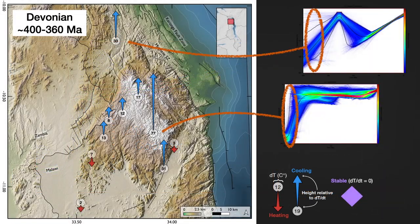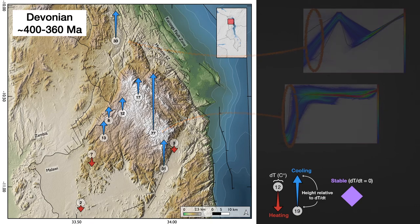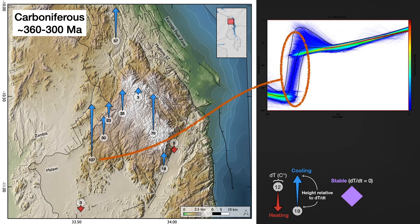Starting with the Devonian, most samples indicate cooling and there's not much difference between the samples along the plateau and the samples off the plateau. It's important to note that this time period was primarily constrained by the zircon helium data, and all the zircon helium ages range from 300 to 400 million years. Some samples do not have zircon helium data so they're less well constrained — that's particularly true for the sample in the southwest and the samples along the eastern edge. Moving into the Carboniferous, it's very similar to the Devonian; however, the overall magnitude of cooling is drastically increased.